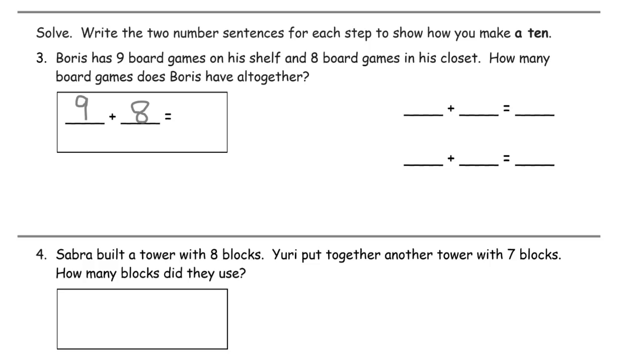Boris has 9 board games on his shelf and 8 board games in his closet. How many board games does Boris have all together? Well, they already wrote it out for us, right? So 9 needs a 1 to make 10, and we'll have 7 for the other part of 8. So it's 9 plus 1 that equals 10. And 10 plus 7 for 17.